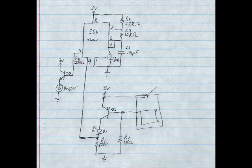That pin 3 goes through R5, through that resistor, then to the base of Q2, and then that signal is pushed through the buzzer.